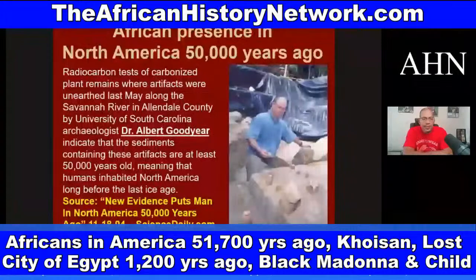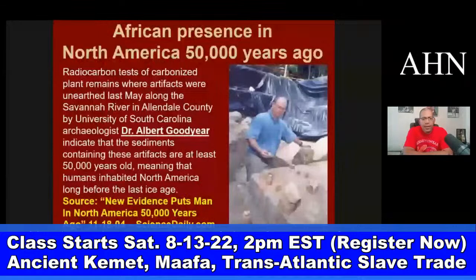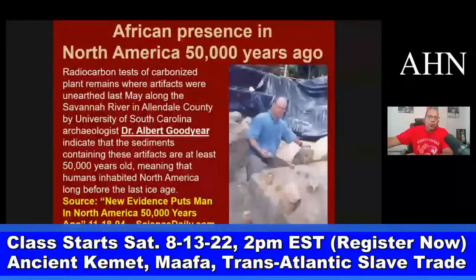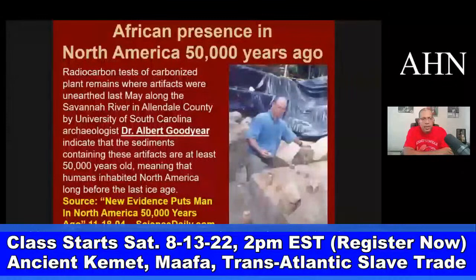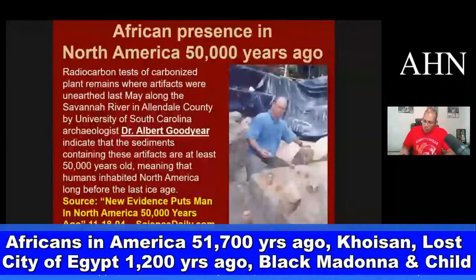They found artifacts, architecture, campsites, carvings, footprints in lava, genetic M174D haploid groups related to DNA and genetics, Egyptian carvings, Egyptian writings, footprints in lava, linguistics, paintings, skulls, skeleton structures, and tools — 13 different types of evidence fairly documenting an African presence going back at least 51,700 years. An article from ScienceDaily.com dated November 18, 2004 — 'New Evidence Puts Man in North America 50,000 Years Ago' — states that radiocarbon tests of carbonized plant remains unearthed along the Savannah River in Allendale County by University of South Carolina archaeologist Dr. Albert Goodyear indicate the sediments are at least 50,000 years old.